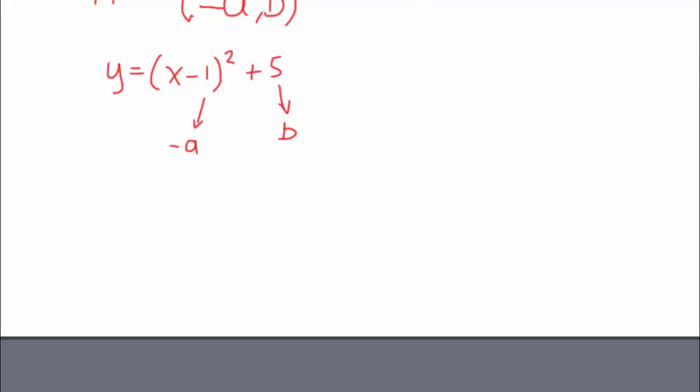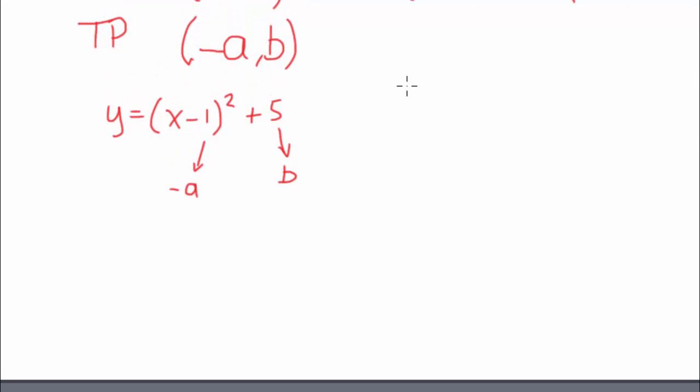So what we then need to do is just work that out. So your turning point coordinates are whatever minus a is, and whatever the b is. So what we've got is minus, minus 1, because the minus in front of it is important, and b is just 5. So now we know the turning point is at 1, 5.